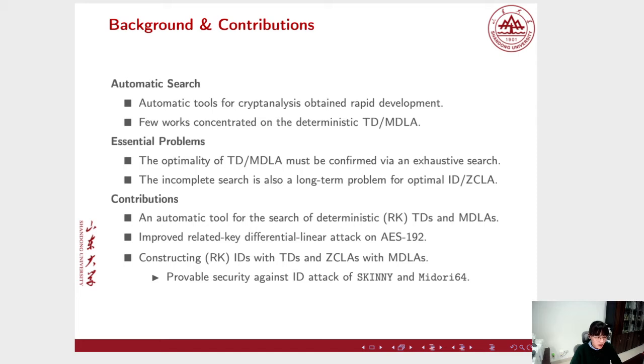With this in mind, the contribution of this work can be divided into three parts. First, we propose an automatic tool for the search of deterministic RKTD and MDLA. The second contribution is that we improve the related-key differential-linear attack on AES-192 by a novel property. At last, we develop a way to apply the automatic tool to construct RKID with TD and ZCLA with MDLA. This technique is implemented with several ciphers and the provable security bonds of Skinny and Midori64 against the impossible differential distinguishing attack are generalized.